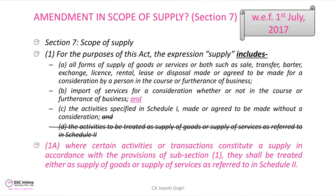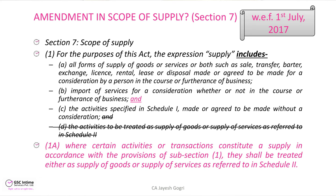The second sub-clause of Section 7(1) says that any import of services, which may or may not be in the course or furtherance of business but which is for consideration, will be considered a supply. The third clause says that certain activities which may not be for consideration but which are defined in Schedule 1 will be considered supply.